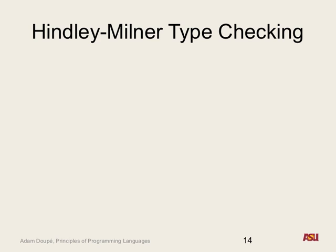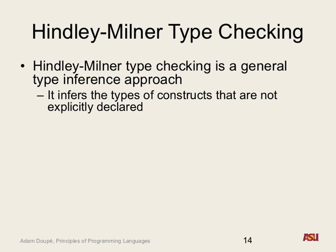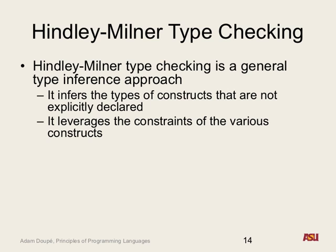Hindley-Milner type checking is a general algorithm to automatically infer what the types are at all points in a program and for all variables. This is amazing because you as the programmer don't have to specify any of the types — the type system decides for you. The key idea is it uses base knowledge: array access means the argument returns some index type, function calls constrain types based on invocation. If it ever gets to a point where an int is the same as a function or a string, it throws a type error.